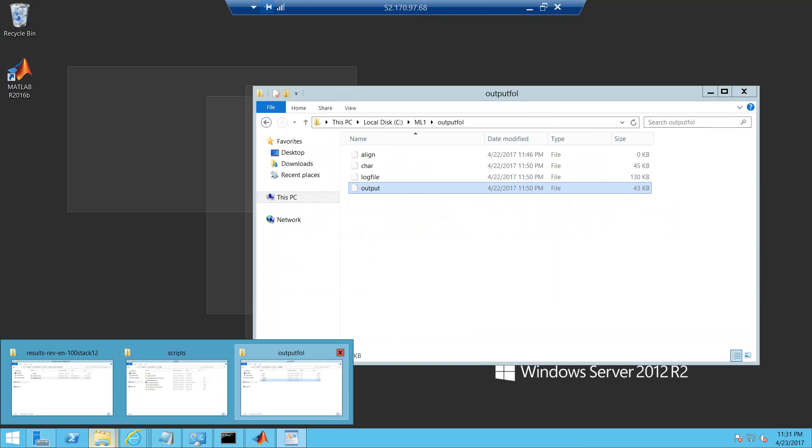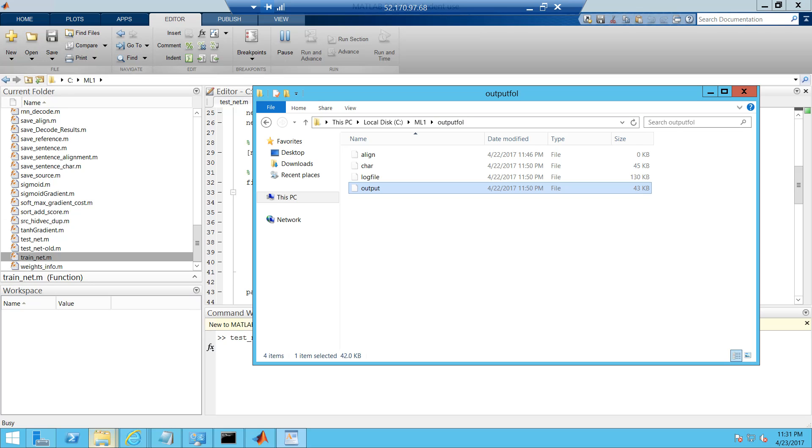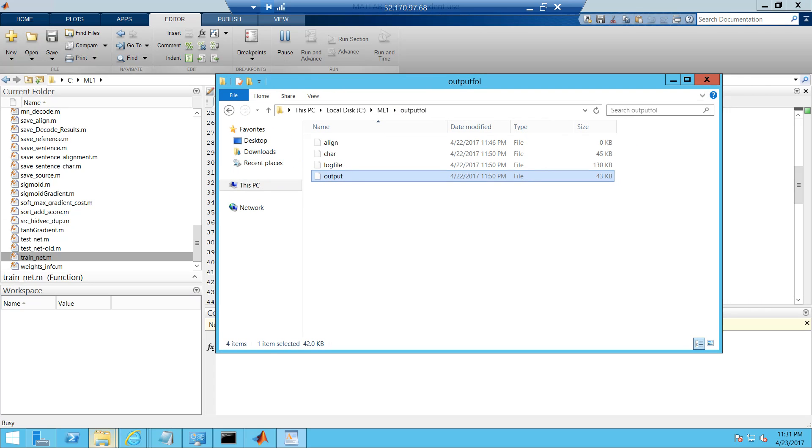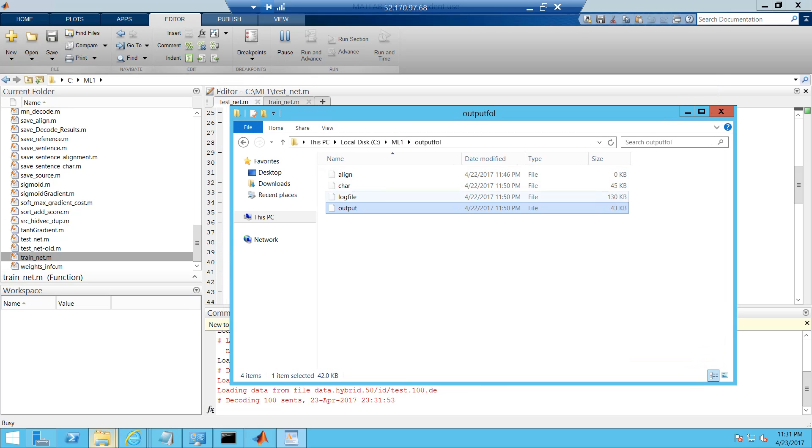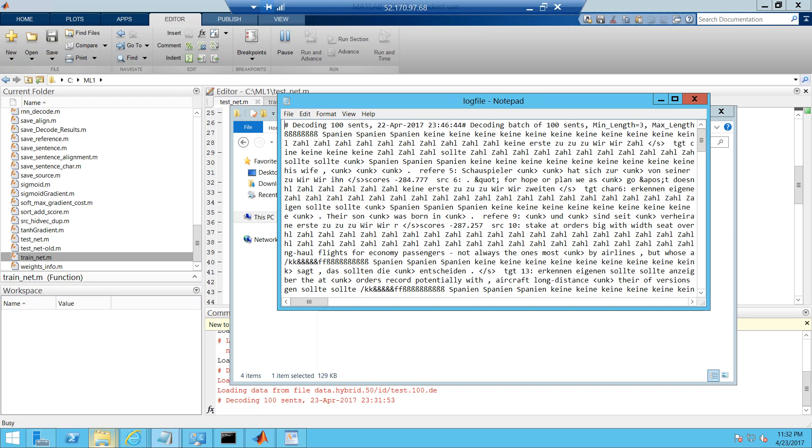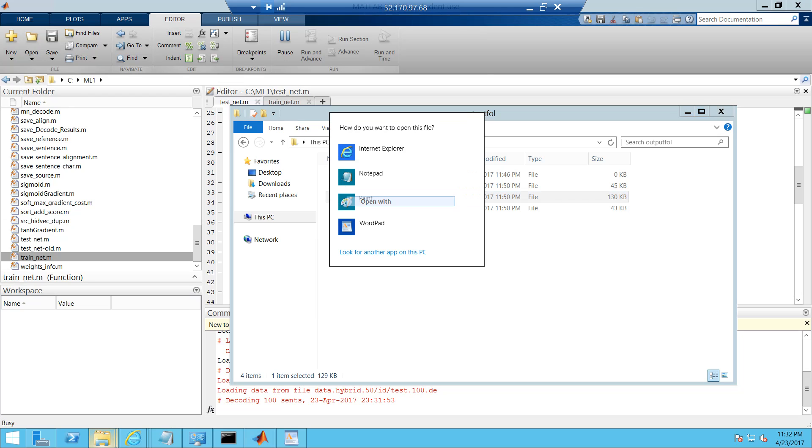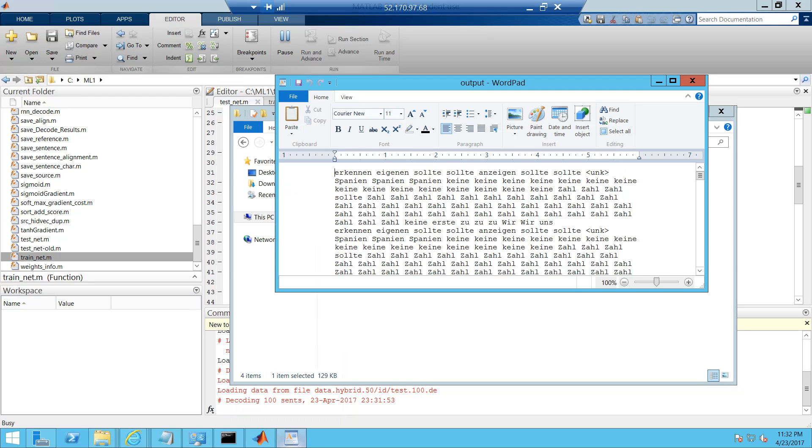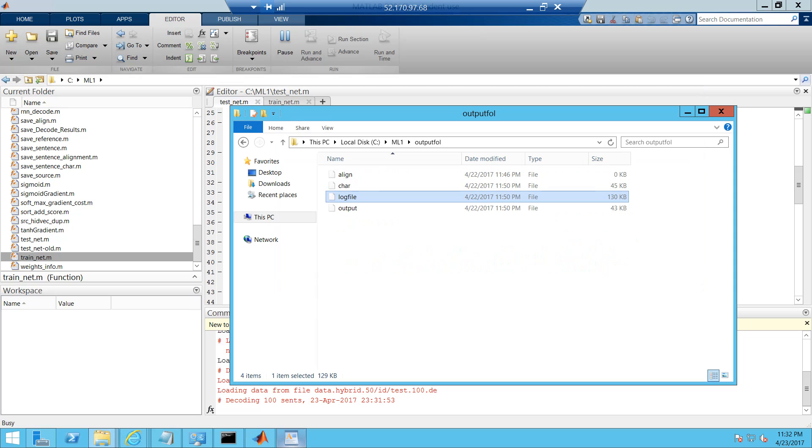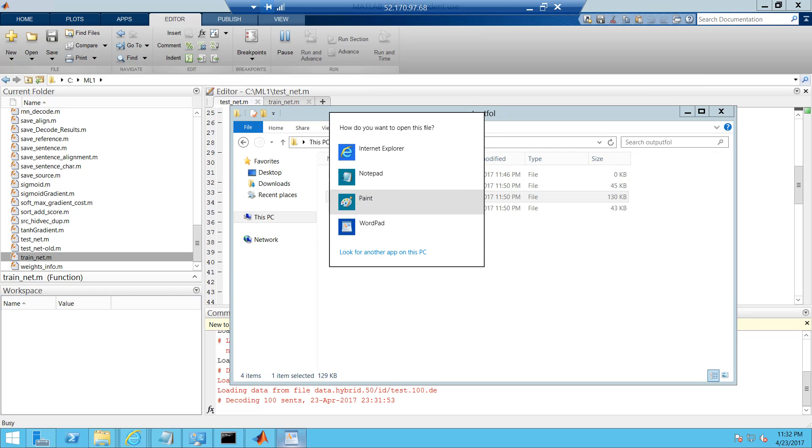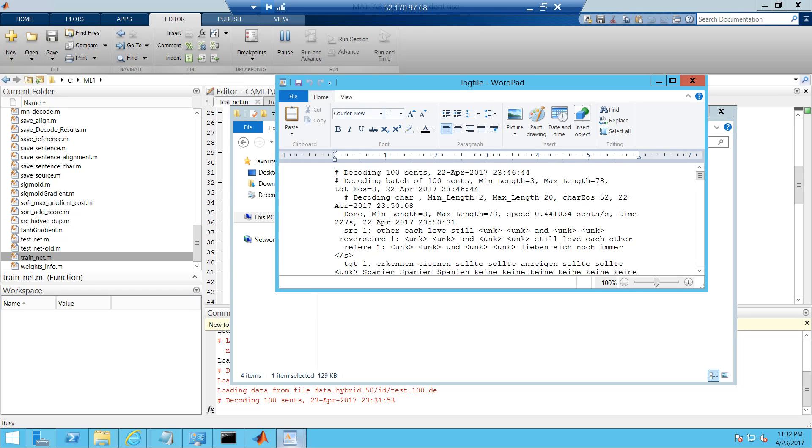Let me go ahead and test it out. This will go ahead and create output folder in the same directory. If we look at the output, there are two files. One is the log file and the other is the output file. If you look at the log file, let me open it in a wordpad.